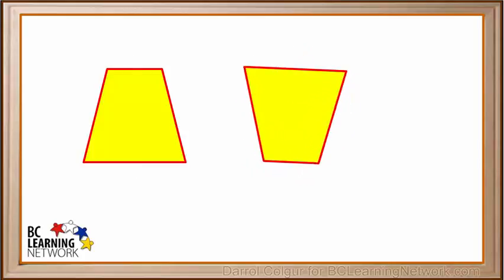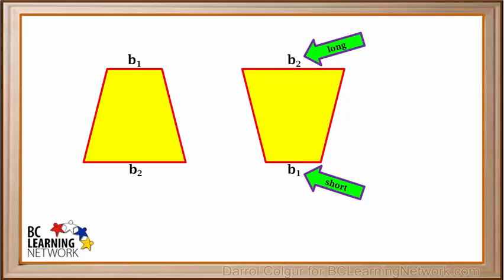We'll rotate the second copy like this. Looking at the copy on the right, we had turned it upside down, so the short side B1 is now on the bottom, and the long side B2 is now on the top.